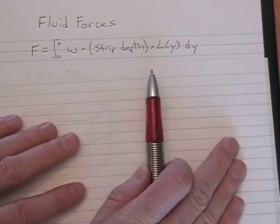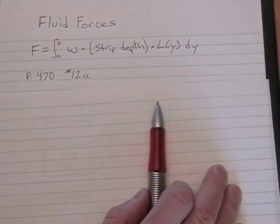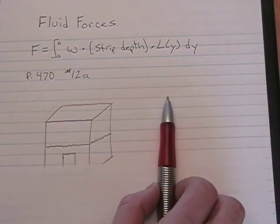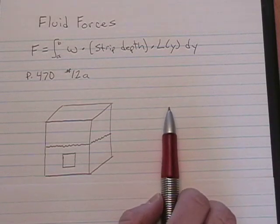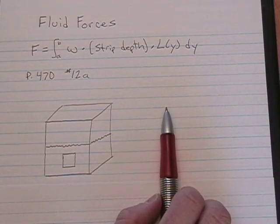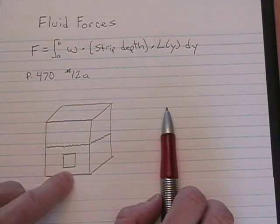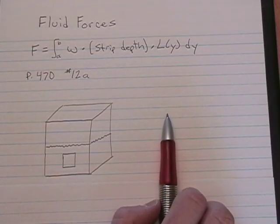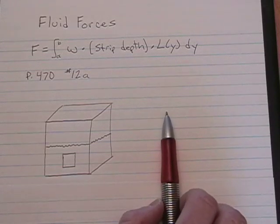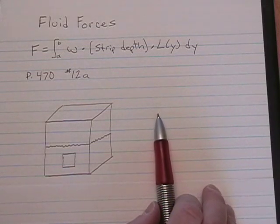Okay, I want to take a look at page 470, number 12. And to save a little time, I've already sketched the tank. It's a rectangular tank with a little window, a one by one square window, one foot above the base. I know the drawing is not exactly to scale, but we'll deal with it.